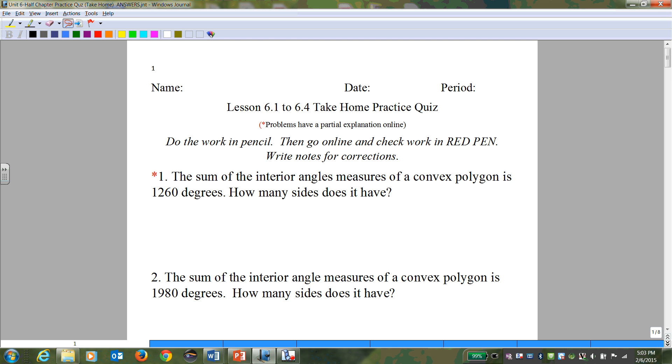Number one, it says the sum of the interior angles measures of a convex polygon is 1260 degrees. How many sides does it have? Let's underline our keywords, get in the habit of underlining the keywords.